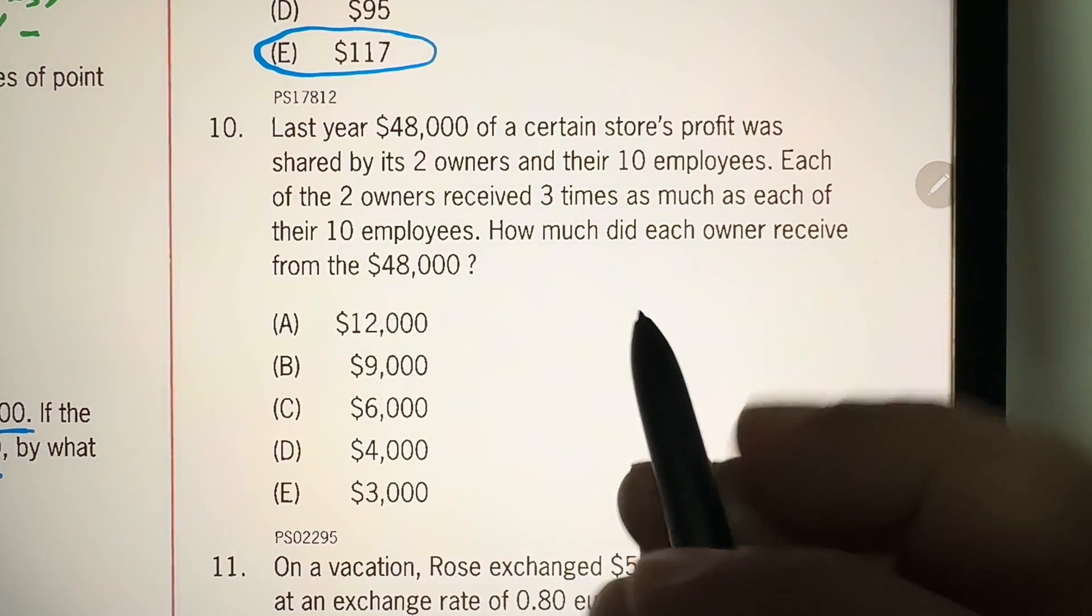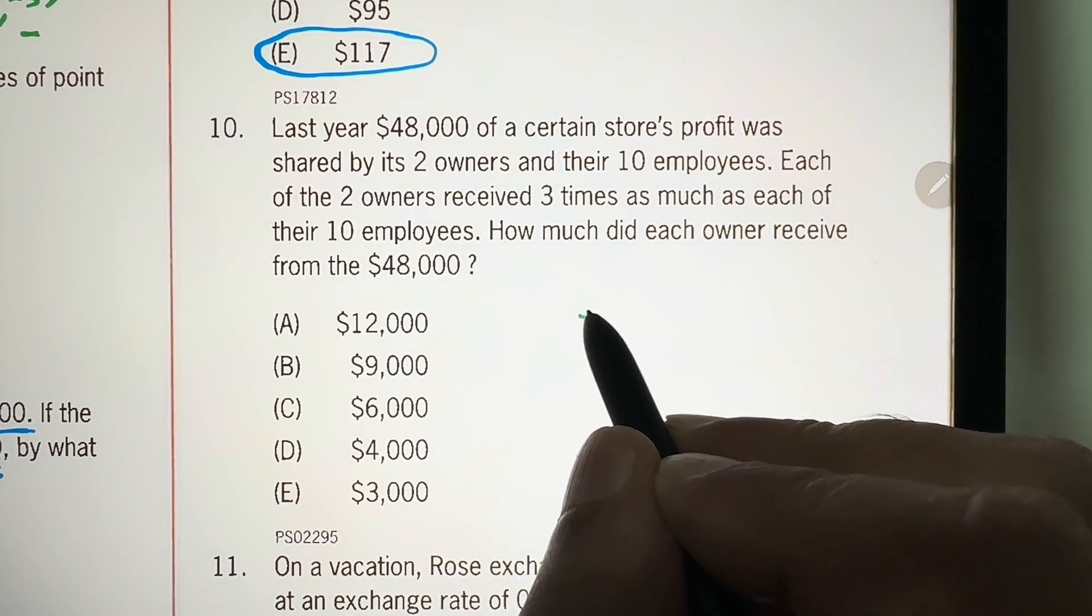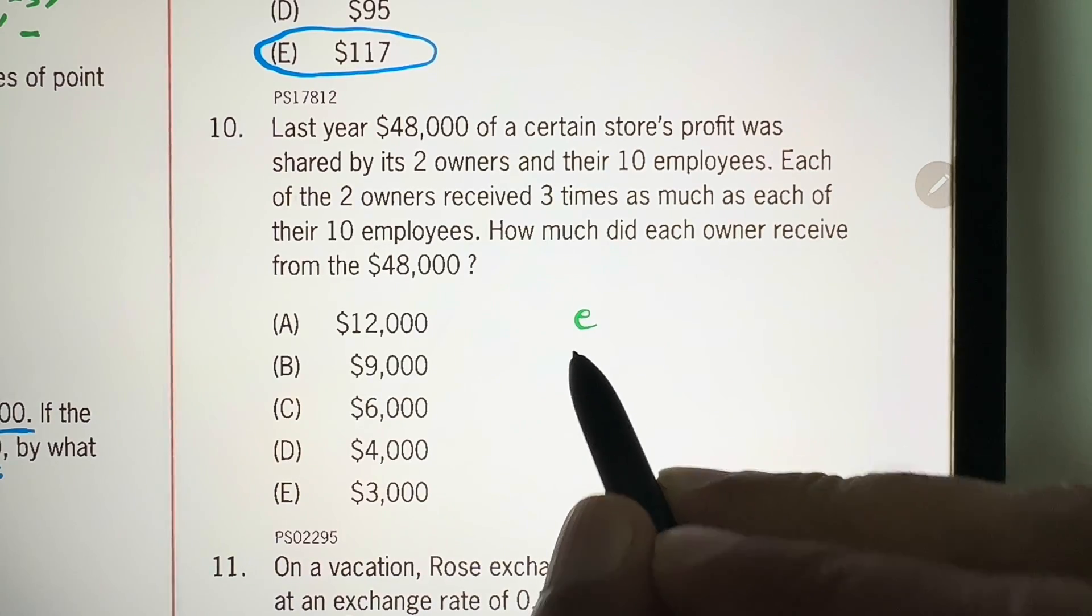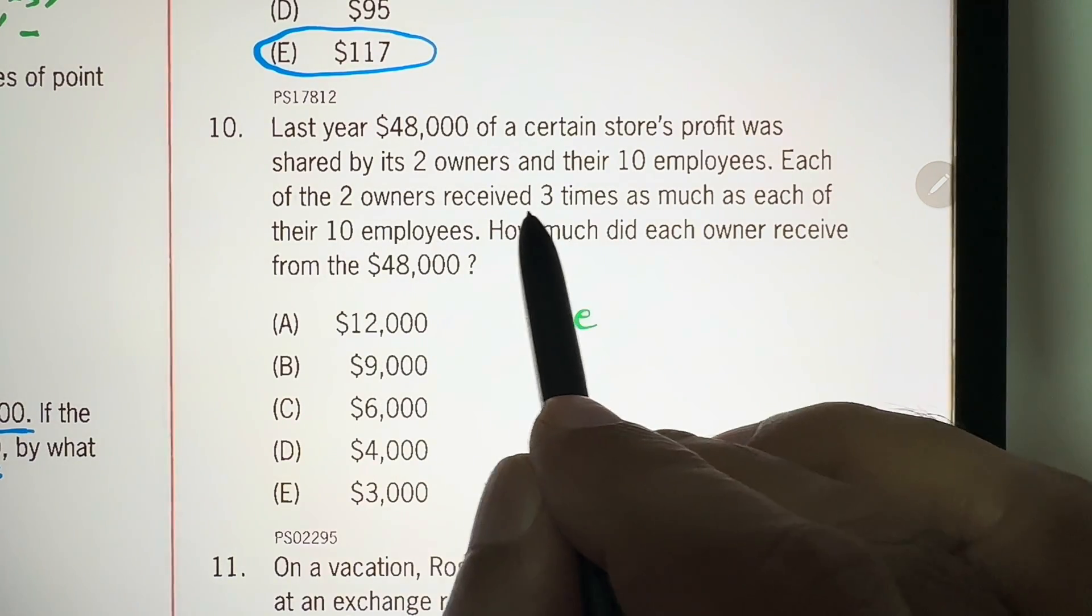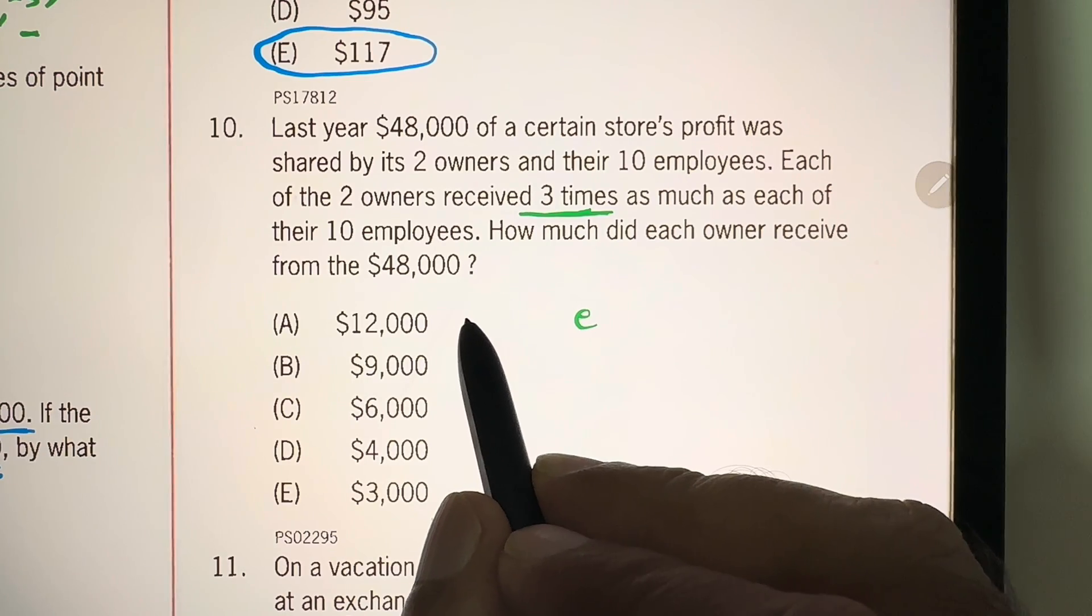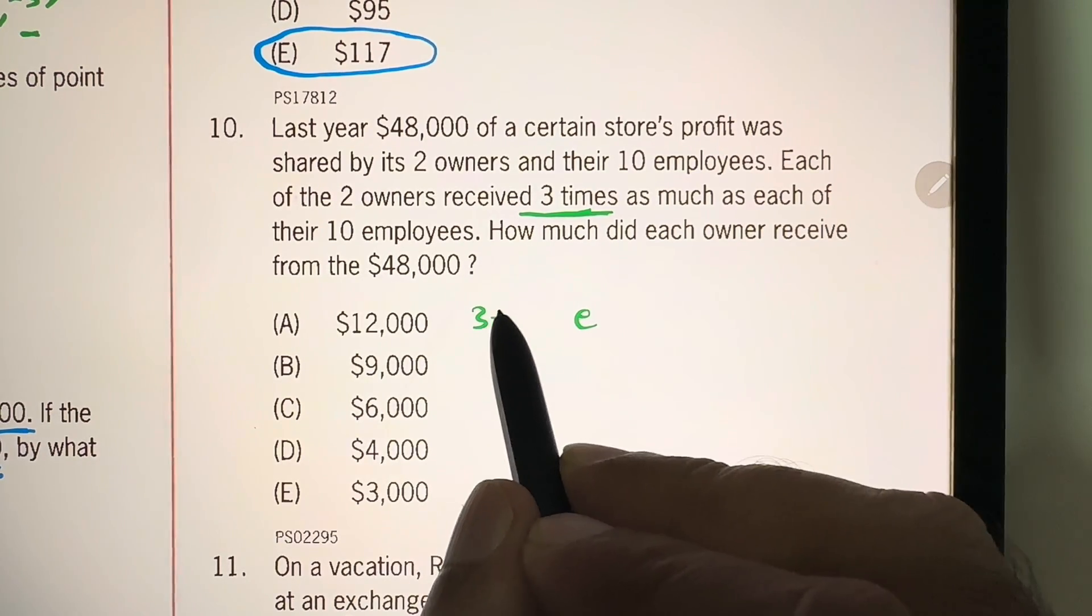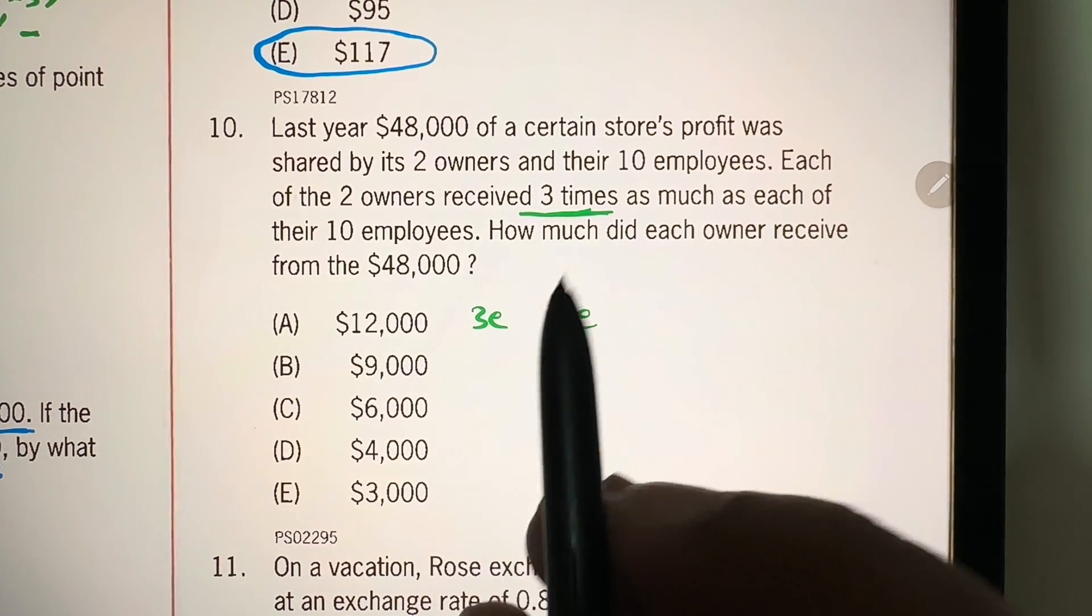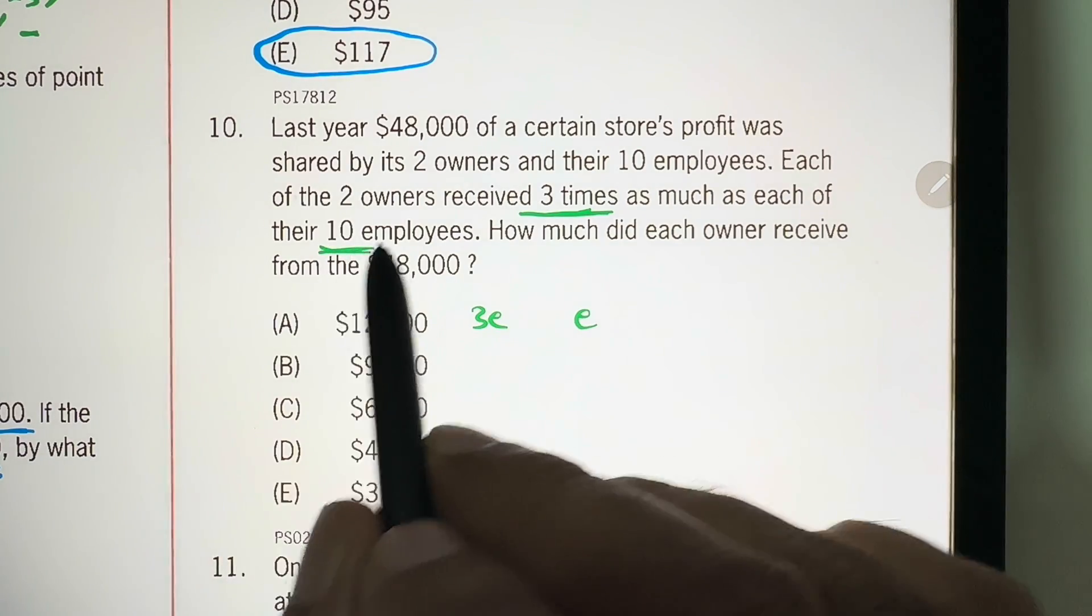Now, here, each employee is getting, let's say, E dollars. It means every owner will get three times as much as each of their 10 employees. So, every owner will get 3E, right? And we know that there are 10 employees.